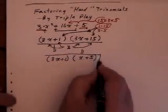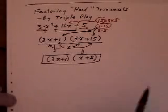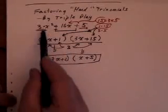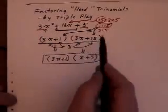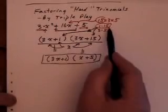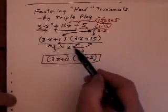And I have now factored the hard trinomial that way. So, with triple play, you start by writing the 3x squared as 3x, 3x, and 3. You take the numbers that add up to 16, plus 1 and plus 15, and you look for a common factor.